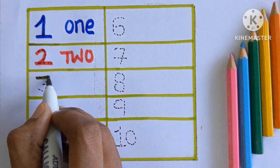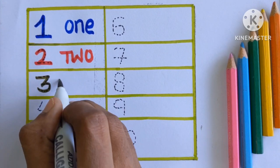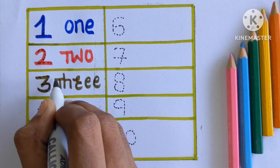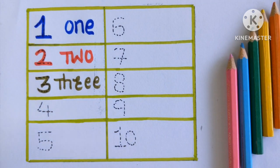Number 3. T-H-R double E. 3, olive green color.